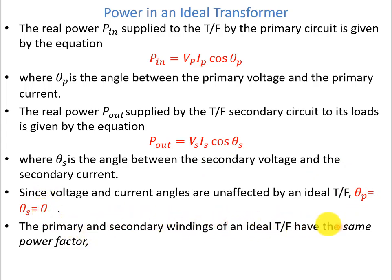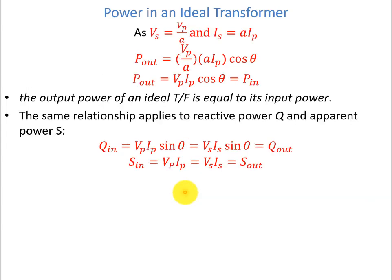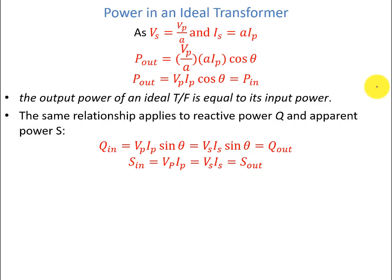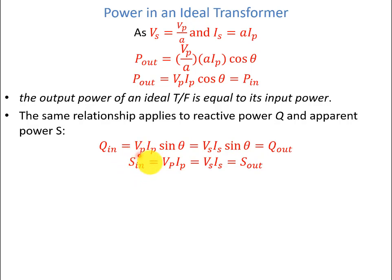The primary and secondary windings of the ideal transformer have the same power factor. Since VS = VP/a and IS = a·IP, P_out can be written as (VP/a)·(a·IP)·cos(θ) — the a cancels out — giving VP·IP·cos(θ) = P_in. So input power equals output power when the power factor angle is the same. Similarly, reactive power Q_in = VP·IP·sin(θ) = VS·IS·sin(θ) = Q_out, and apparent power S_in = VP·IP = VS·IS = S_out. Power does not change within the ideal transformer.